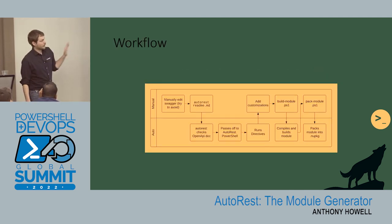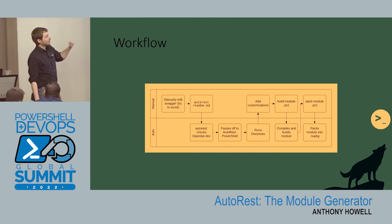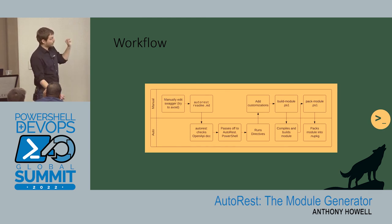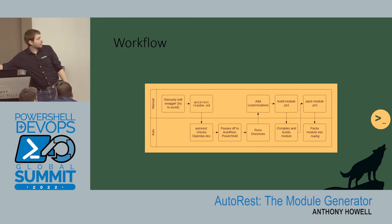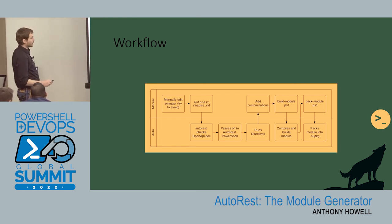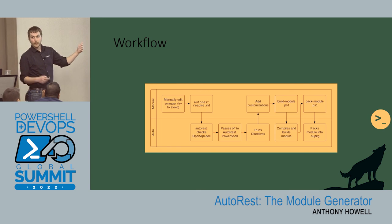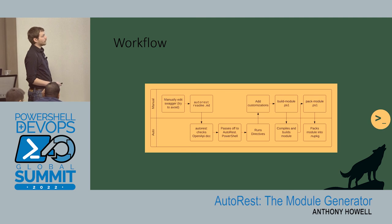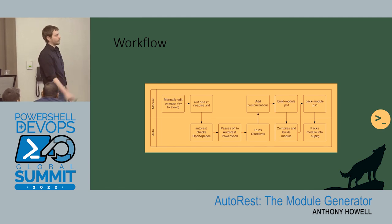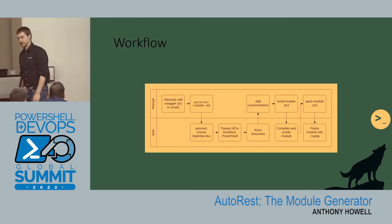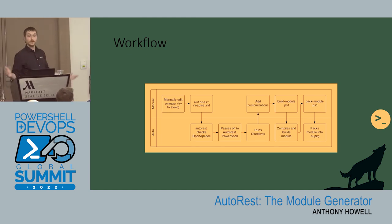So this is the rough process that I use. There are some manual edits I didn't have time to get into — if you want to talk about those, I'm happy to follow up. You call 'autorest readme.md,' that's basically what it does, and then at the end you add customizations because it builds a custom folder with some links if you need help. Then you run 'build-module,' which builds the module, and there's also a 'pack-module' that will pack it into a NuGet package so you can publish it to PowerShell Gallery. Sorry we had to speed up at the end — thanks for sticking around.